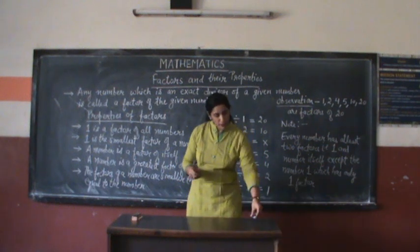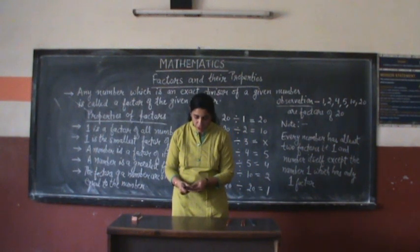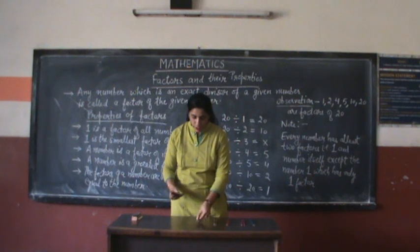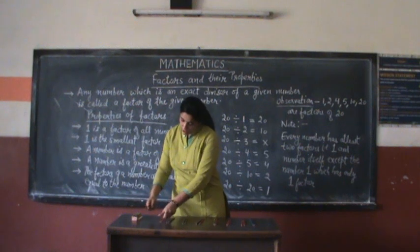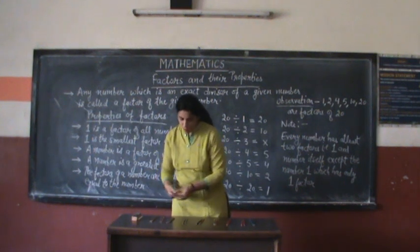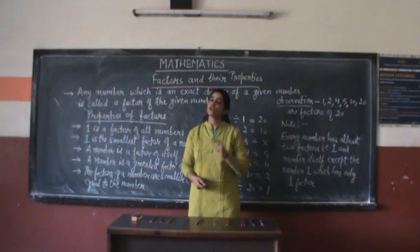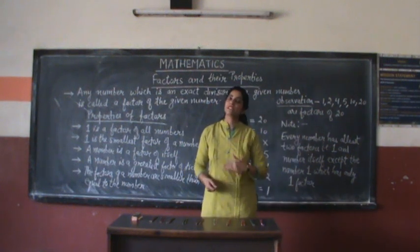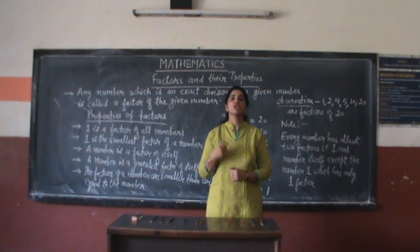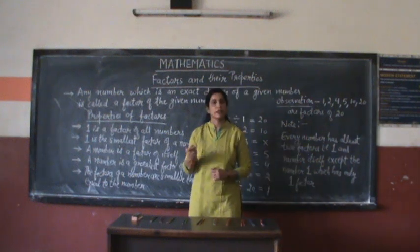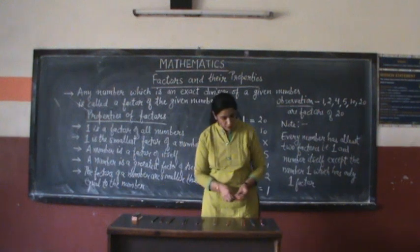Another way could be if I gave two pencils to each child. If I gave equal pencils to each child, you can observe that if you give two pencils to each child, 10 students can be given pencils. So that means 2 divides 20 exactly, as well as 10 also divides 20 exactly, which means 2 and 10 are also the factors of 20.